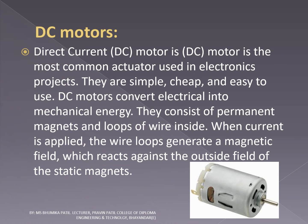DC motors. A direct current DC motor is the most common actuator used in electronic projects. They are simple, cheap and easy to use. DC motors convert electrical signals into mechanical energy. They consist of a permanent magnet and loops of wire inside. When current is applied, the wire loops generate a magnetic field which reacts against the outside field of the static magnet. And here is a picture of DC motor.